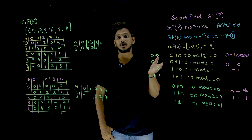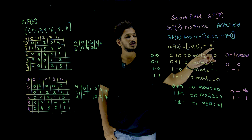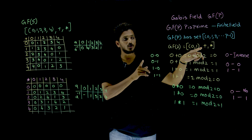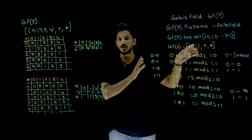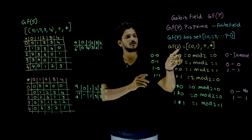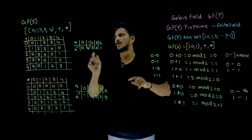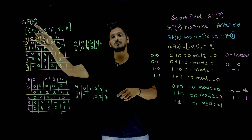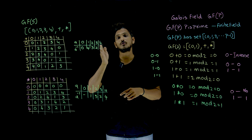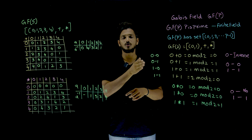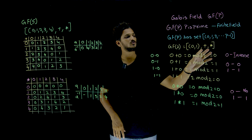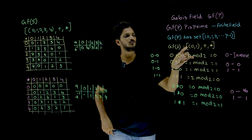The operations are plus modulo p and multiplication modulo p. We did not explicitly mention the modulus operation, but actually plus means plus modulo p. For GF of 2, p means 2; for GF of 5, p means 5 — so plus modulo 5 and multiplication modulo 5. This is what we call a Galois field.